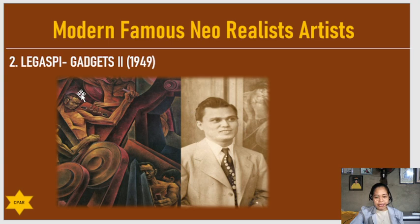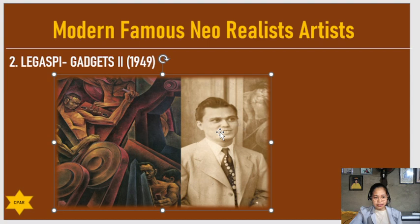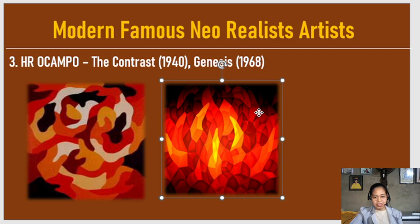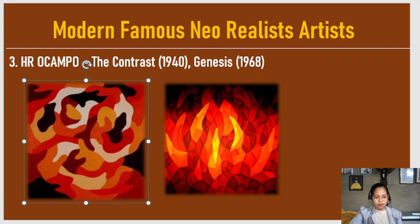Next is Ligaspi, also a neorealist artist, who painted The Gadgets 2 in 1949. This painting depicts the fusing of men during the age of industrialization. Another neorealist artist is Ocampo, with his works The Contrast and The Genesis. At first sight, these artworks may be difficult to understand, but they carry a deep meaning.